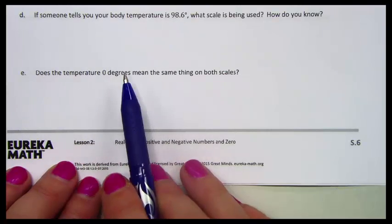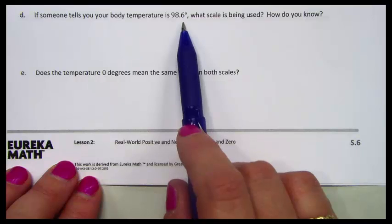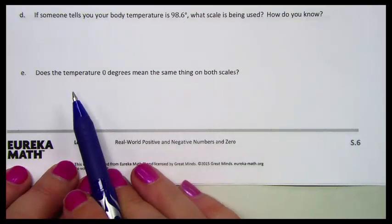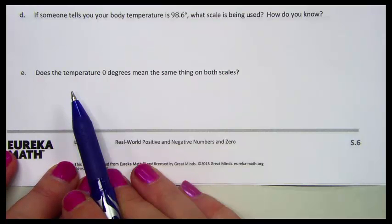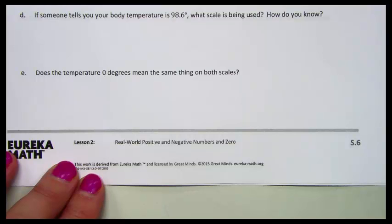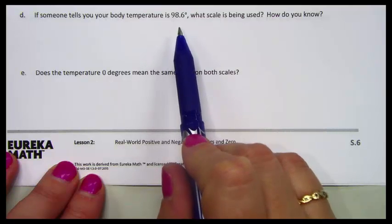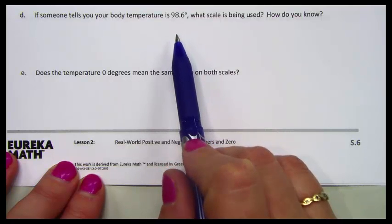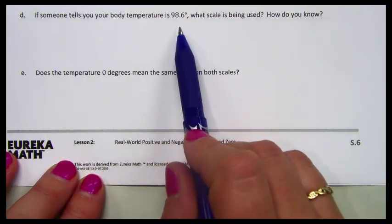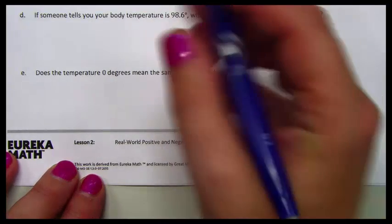If someone tells you your body temperature is 98.6 degrees, what scale is being used? How do you know? Well, if 100 degrees is the boiling point of water, which we saw above, is our body close to how hot boiling water is? So I don't think that we would be using the Celsius scale. This would be the Fahrenheit scale.